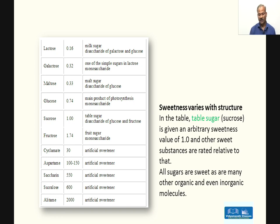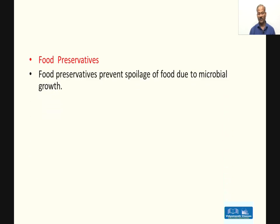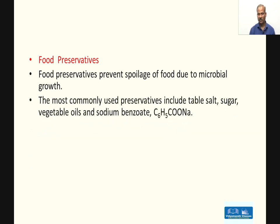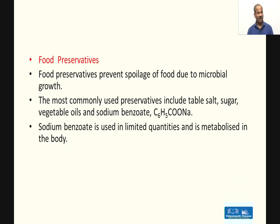Now looking at food preservatives: food preservatives prevent spoilage of food due to microbial growth. The most commonly used preservatives include table sugar, table salt, vegetable oils, and sodium benzoate as a chemical substance. Salt, sugar, and vegetable oils all act as preservatives — for example, in pickles. Sodium benzoate is used in limited quantities and is metabolized in the body.